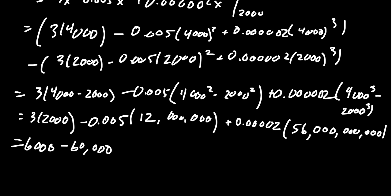And then lastly, 0.00002 times 56 billion. That gives you 112,000. And then adding all those together, we end up with 58,000.